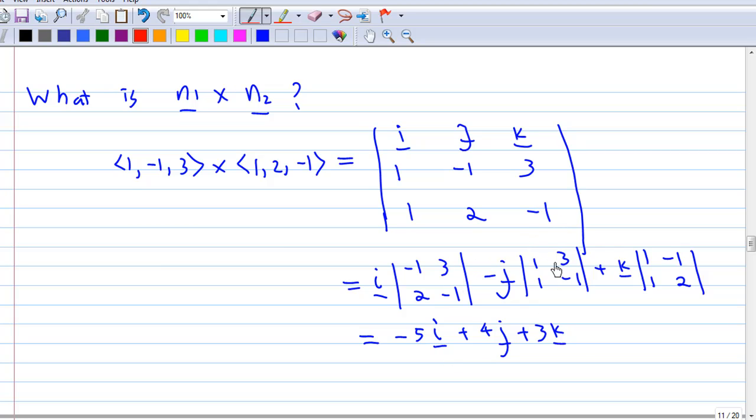So you find that n1 cross n2 is equal to -5i plus 4j plus 3k.